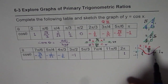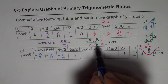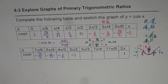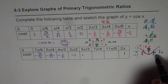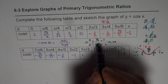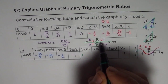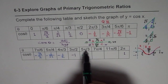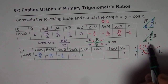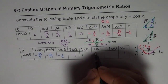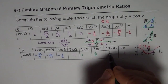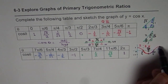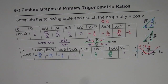Beyond 3 pi by 2, we are in quadrant 4 where all cosine values are positive, since x values are positive there. At 5 pi by 3, the acute angle is pi by 3 and cosine is 1 over 2. At 11 pi by 6, the acute angle is pi by 6 and cosine is square root 3 over 2. At 2 pi, cosine gives the maximum value of 1.